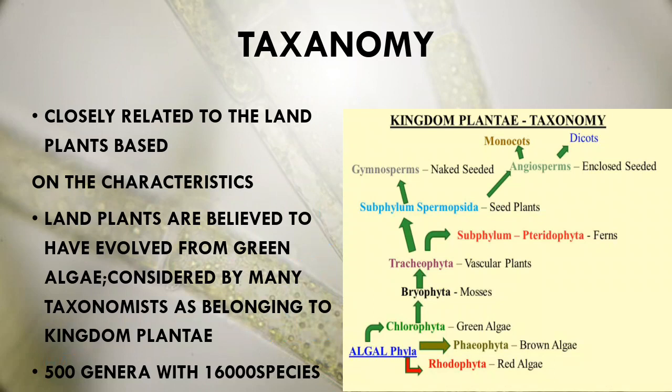Green algae are closely related to land plants based on their characteristics. Land plants are believed to have evolved from green algae. There are 500 genera with 16,000 species existing in nature.